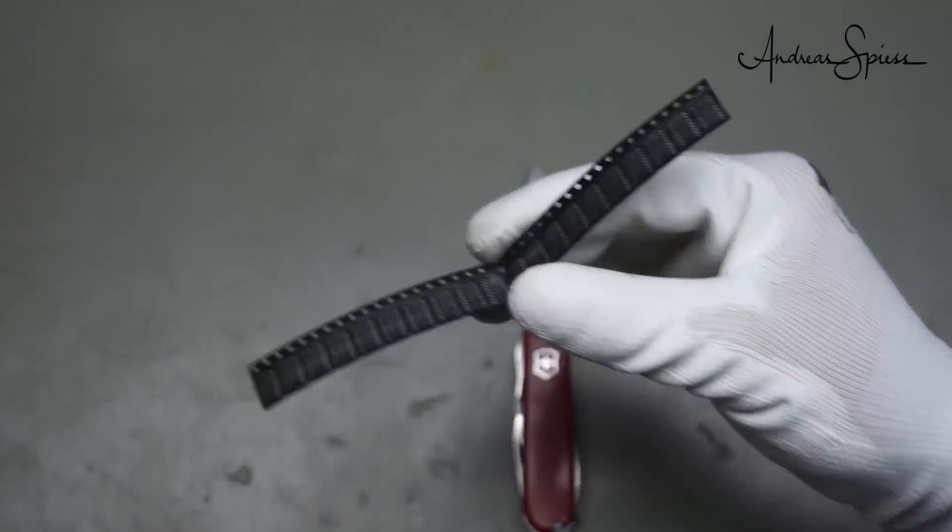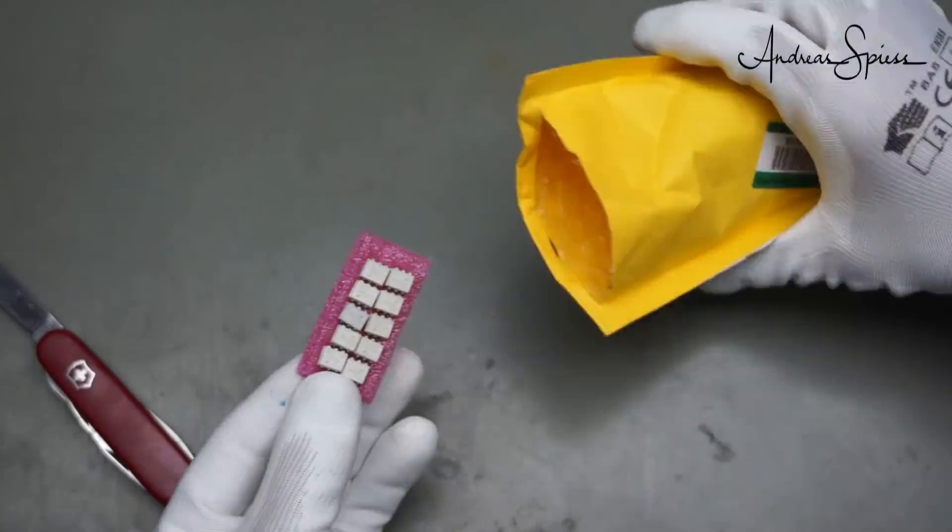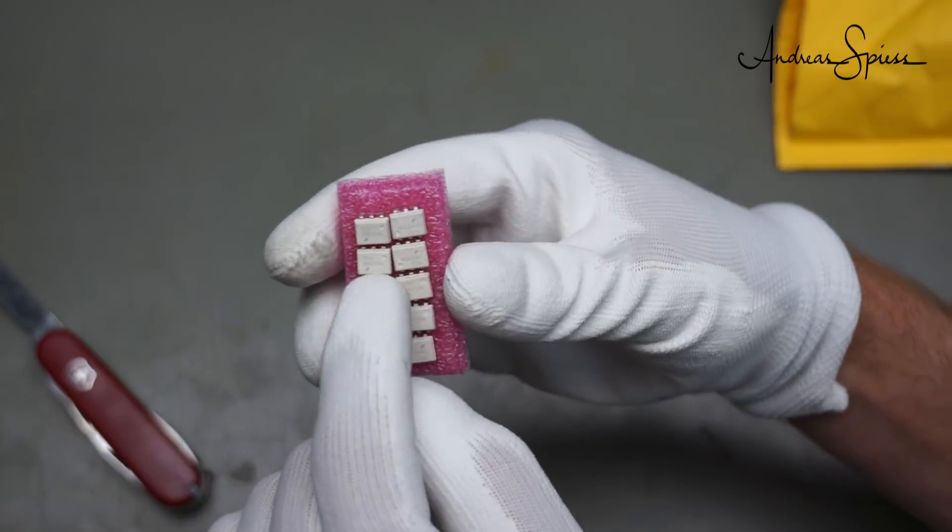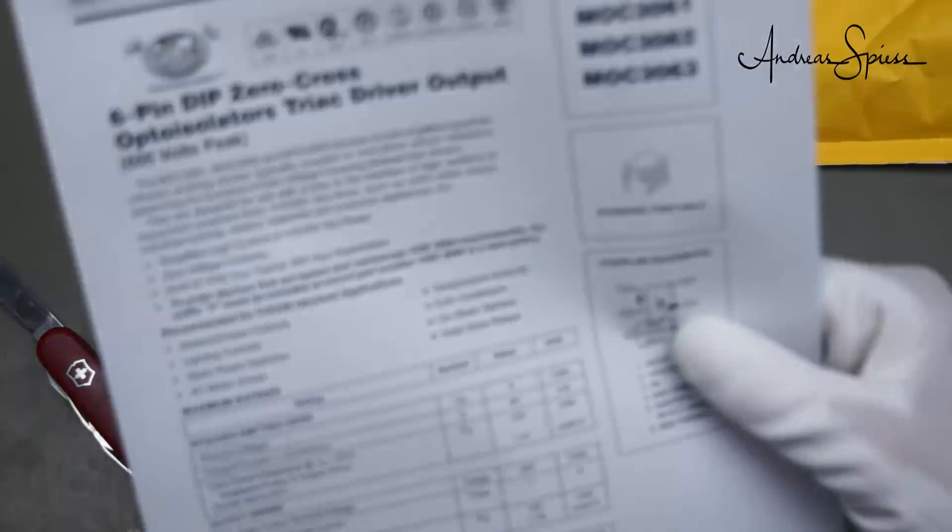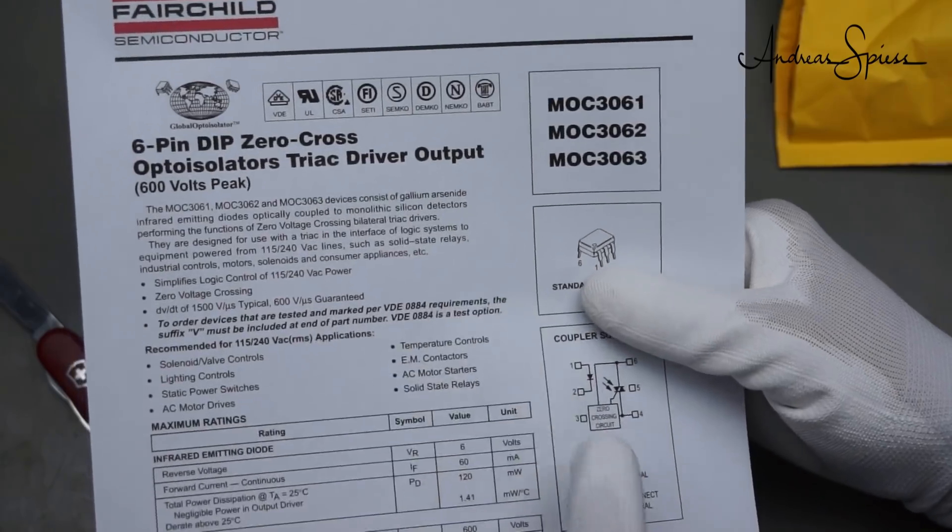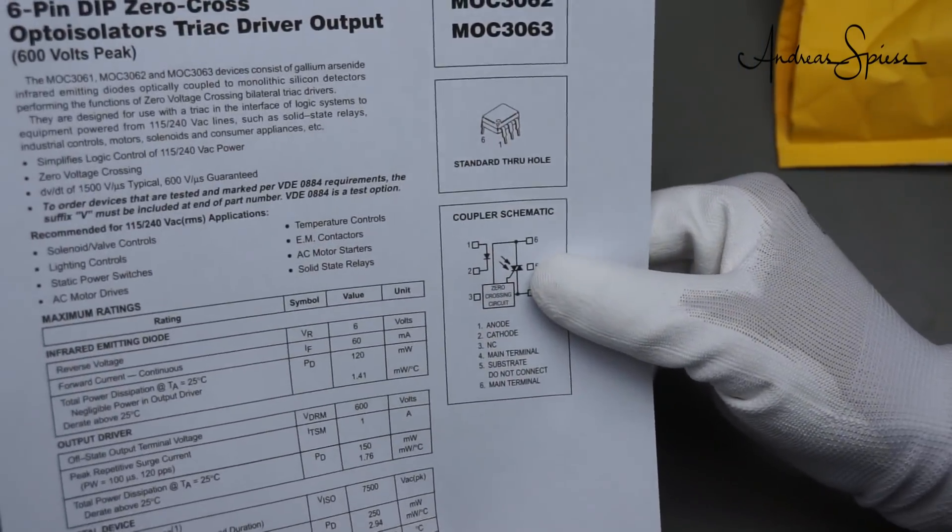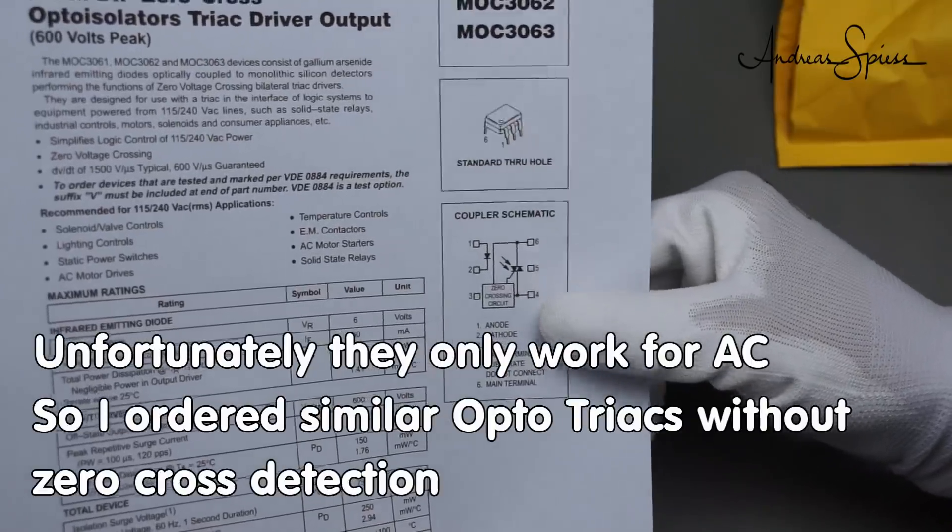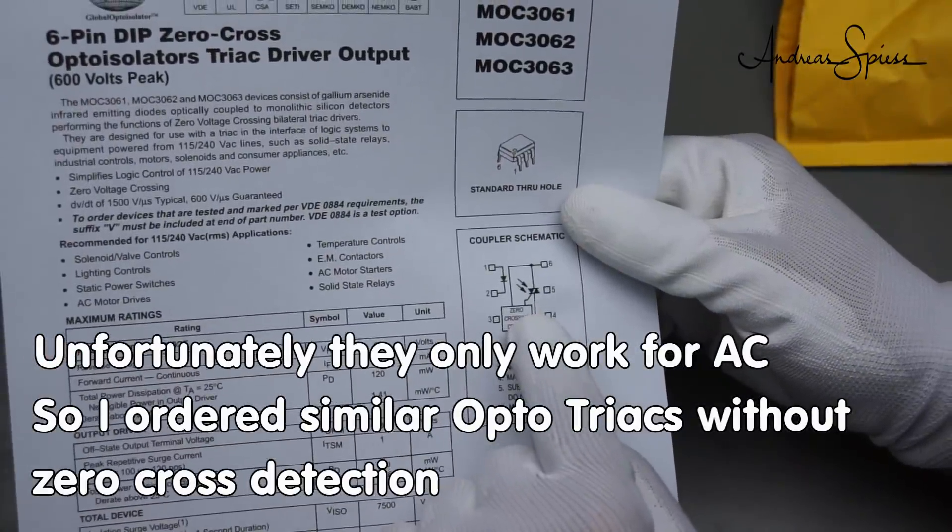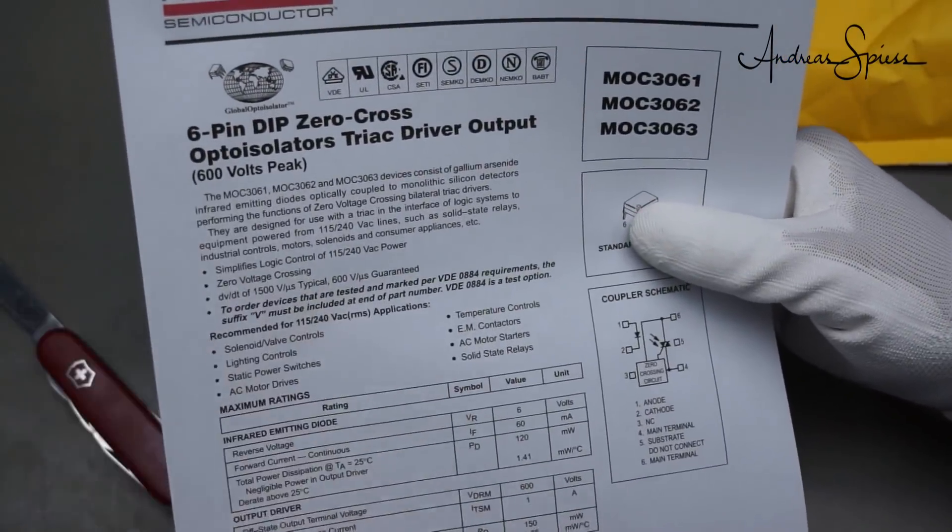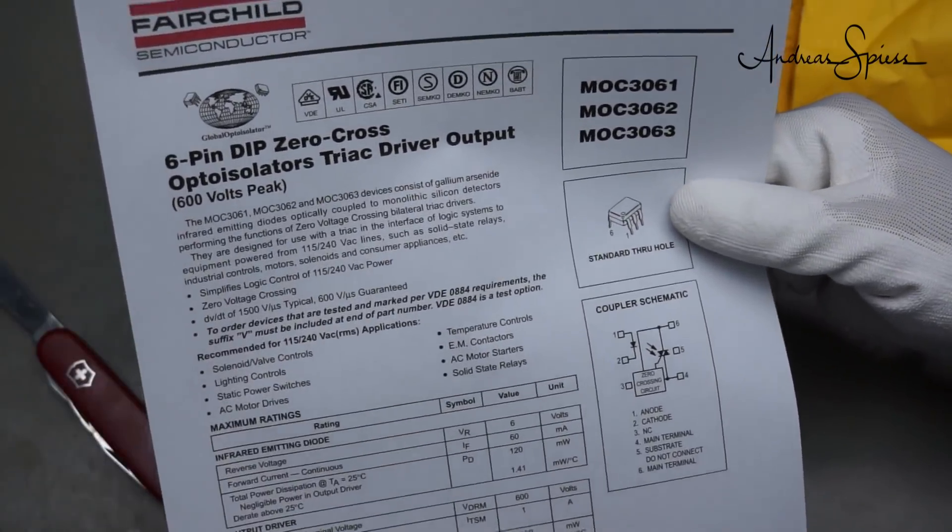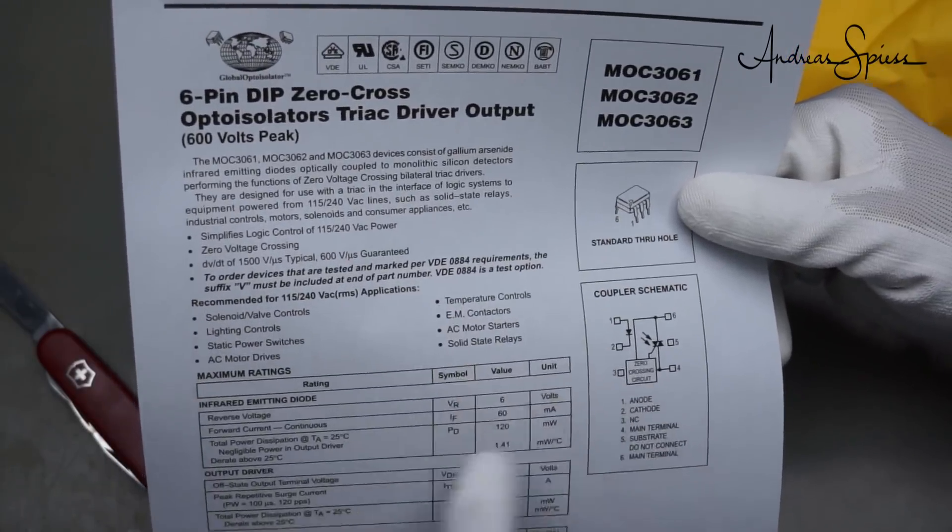And dirt cheap, of course. Next one. These are MOC3063. They are special optocouplers. These are zero cross opto isolators for triacs. And if you remember, I wanted to build a coil gun and I already have some triacs. And these are the driver chips, which you can connect to a microcontroller. My coil gun should work on 450 volt. So even if something happens, there is a complete separation between the coil and my microcontroller.